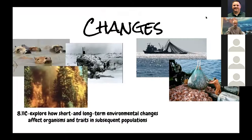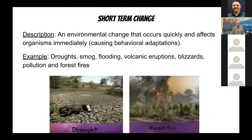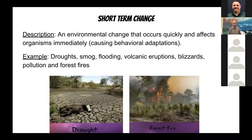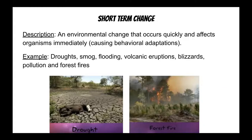Changes — a change is going to come. We have both short-term and long-term changes. A short-term change is an environmental change that occurs quickly and affects organisms immediately, maybe causing behavior or adaptations. Examples of short-term changes include droughts, smog, flooding, volcanic eruptions, blizzards, pollution, and forest fires. In fact, we had a catastrophic event right here in North Texas when the polar vortex put our temperatures well below average winter temperatures, affecting many of the plants that live here. My front yard has not recovered from it yet — I'll have to replace a lot of the shrubs.